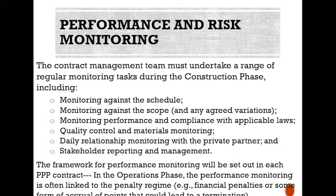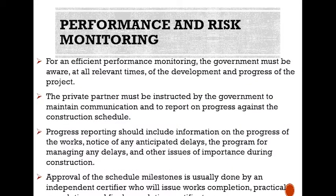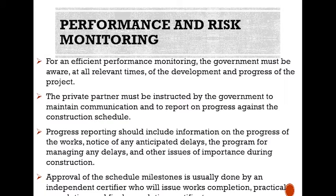The framework for performance monitoring will be set out in each PPP contract. In the operations phase, the performance monitoring is often linked to the penalty regime — for example, financial penalties or some form of accrual of points that could lead to a termination. For efficient performance monitoring, the government must be aware at all relevant times of the development and progress of the project. The private partner must be instructed to maintain communication and to report on progress against the construction schedule. Progress reporting should include information on the progress of works, notice of any anticipated delays, the program for managing any delays, and other issues of importance during construction. Approval of scheduled milestones is usually done by an independent certifier who will issue work completion, practical completion, and final completion certificates.